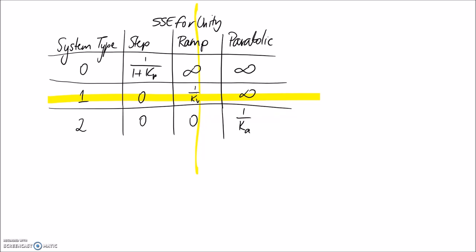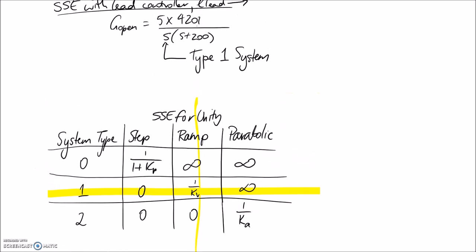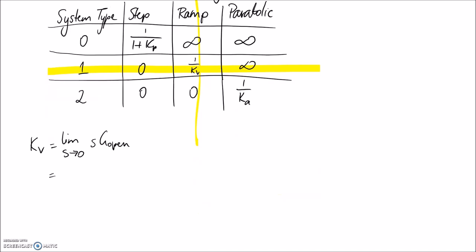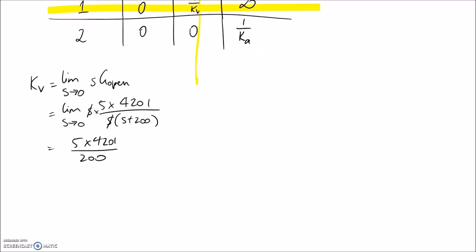To use this, we need to figure out our error constant KV. The equation is the limit as S goes to 0 of S times G_open. Substituting in our open-loop transfer function, the S on the top and S on the bottom cancel out, and setting the limit to 0 eliminates the remaining S term, leaving a value that comes out to about 105 for KV.